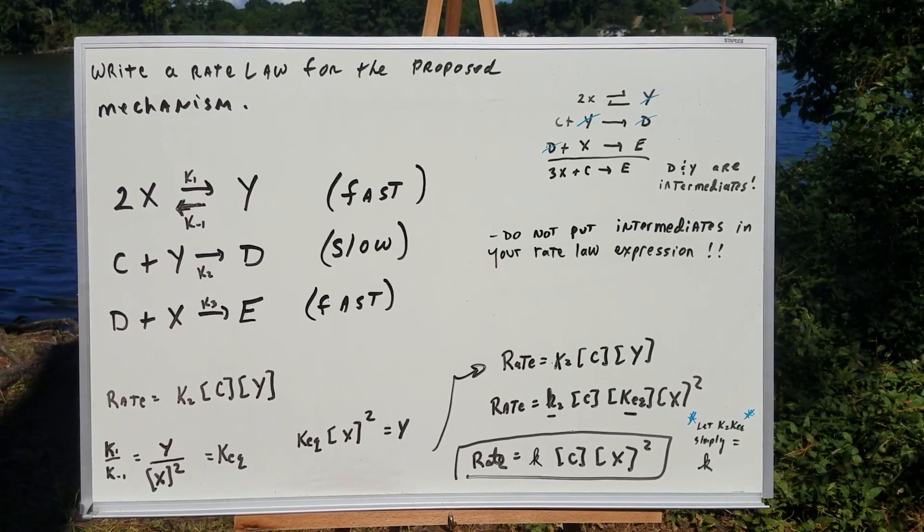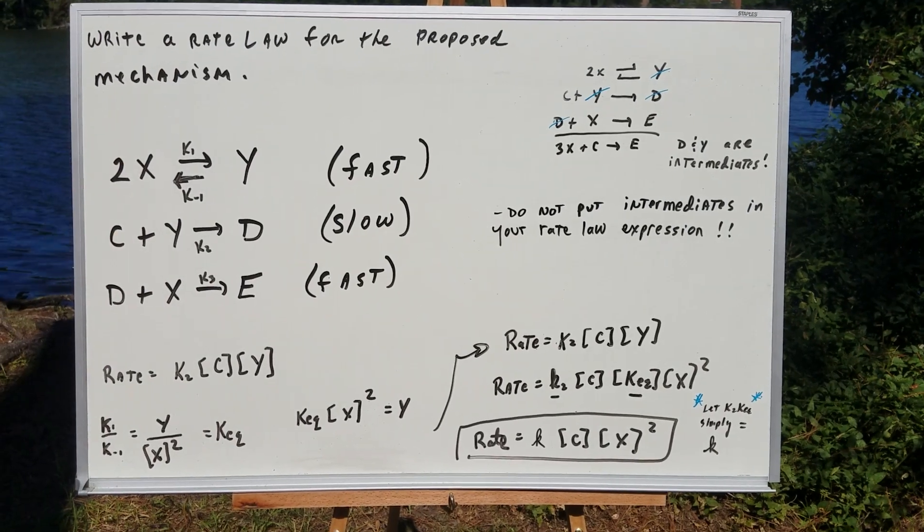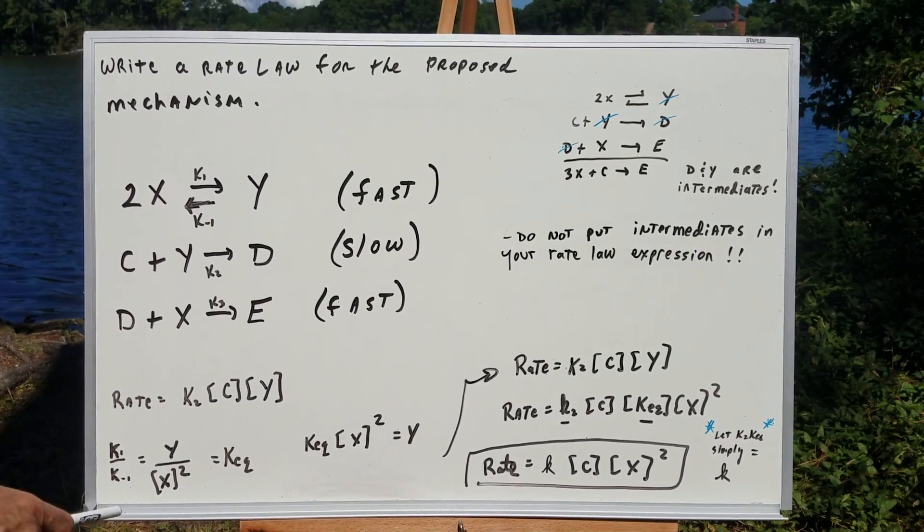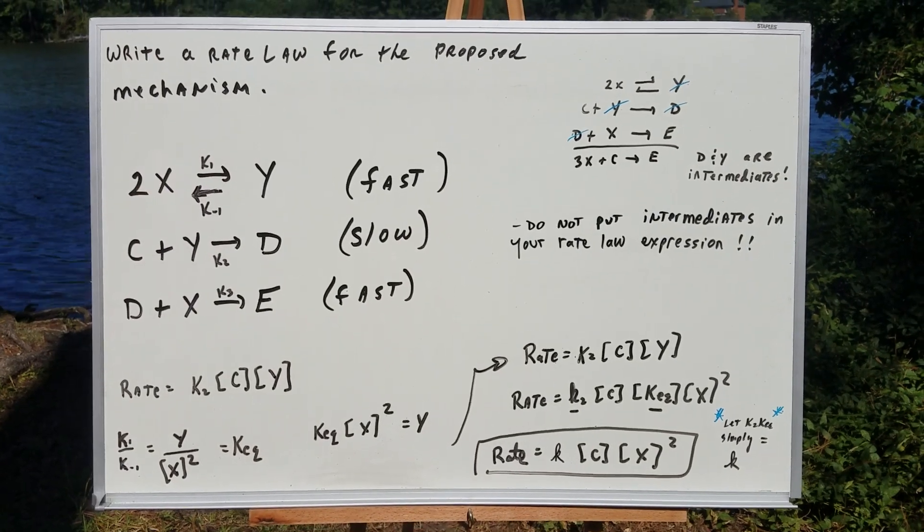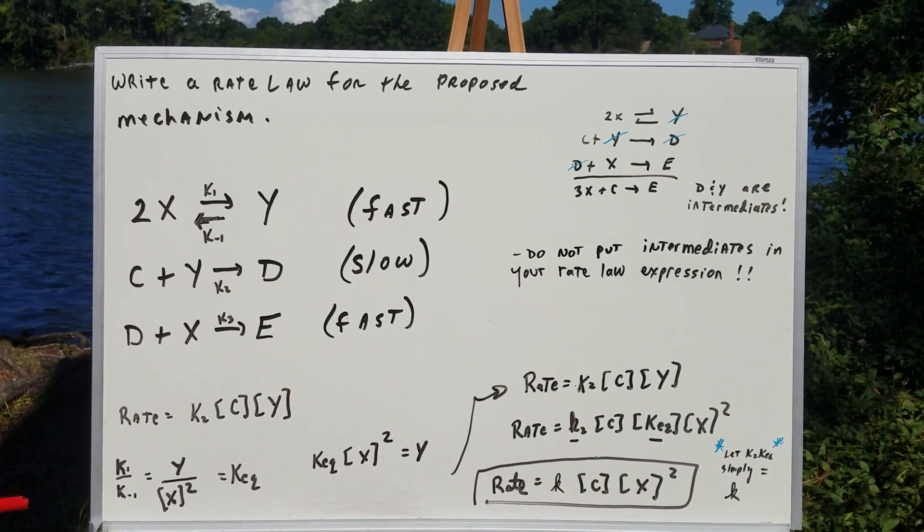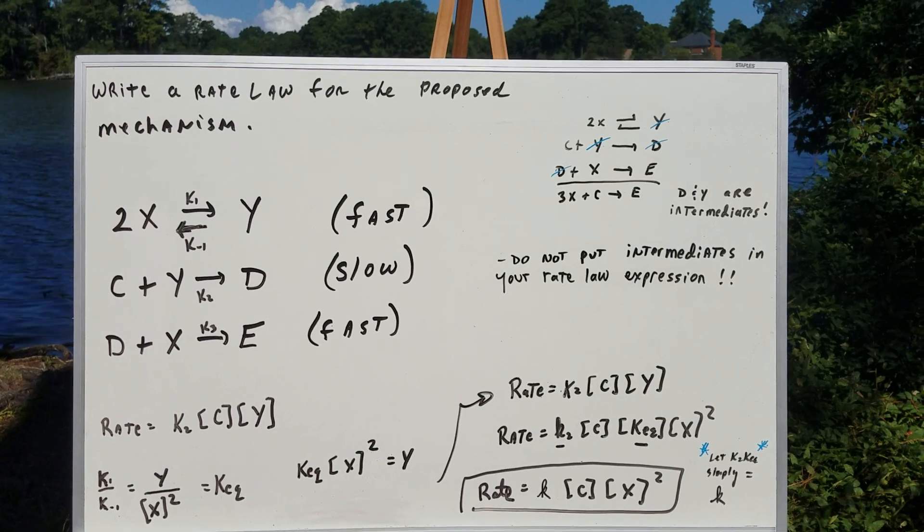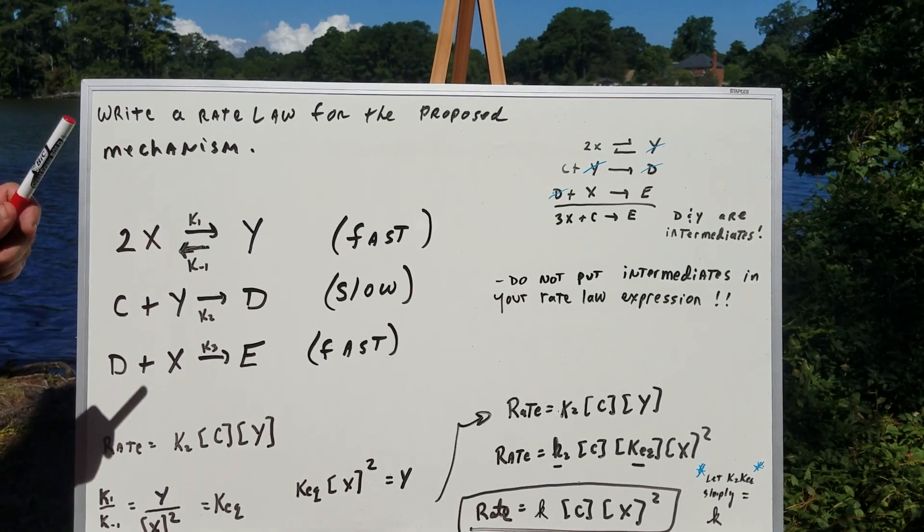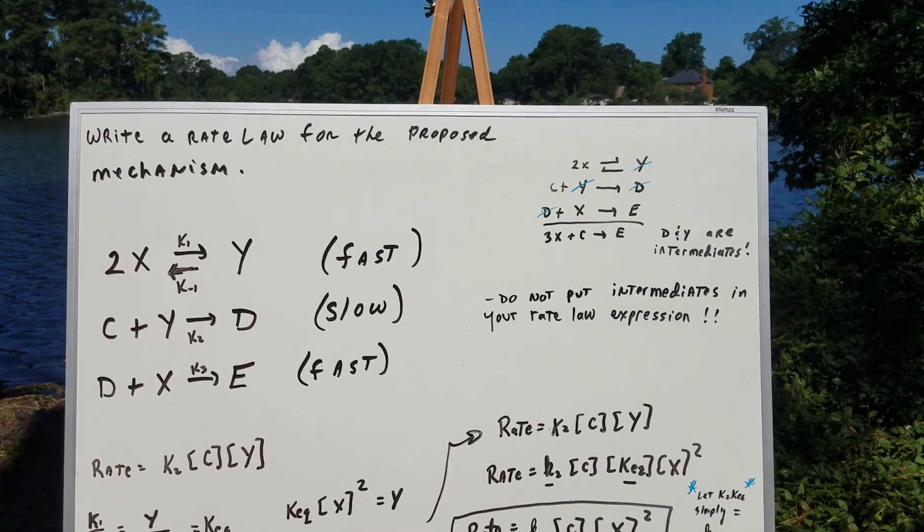Now, what I want to do is write a rate law for the proposed mechanism. I'm going to give you three steps to a mechanism. And each step, the forward reaction, K1 is the first rate constant. K minus 1 is the rate constant in the opposite direction. K2 would be the rate constant for the second step, which is the rate limiting or rate determining or the slow step. And that's the step that governs the whole chemical kinetics. So that's going to be our most important step.